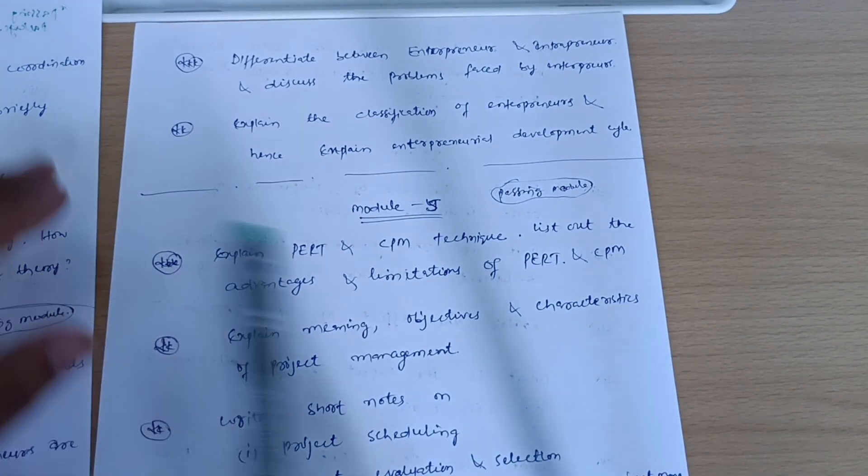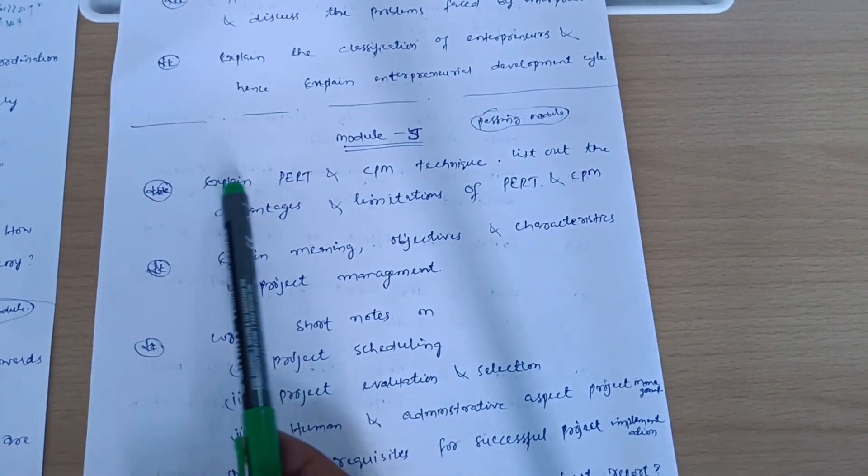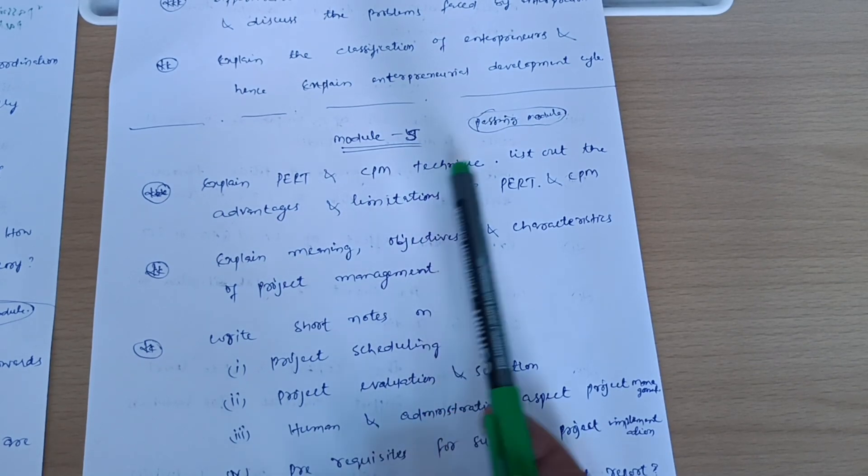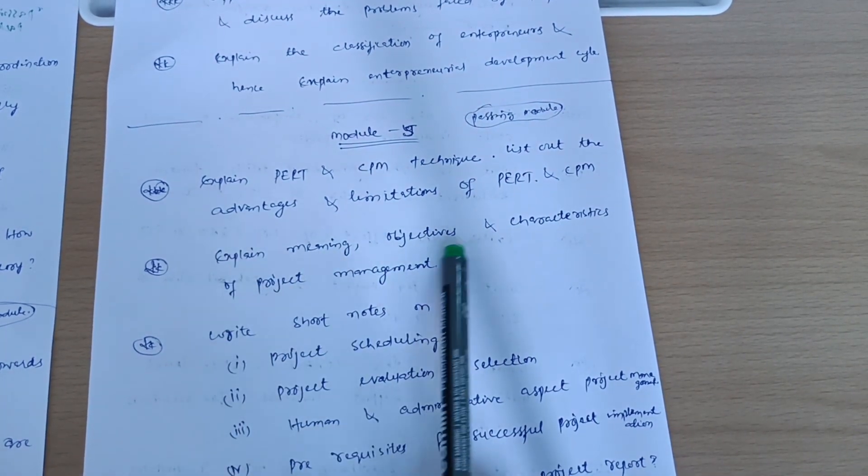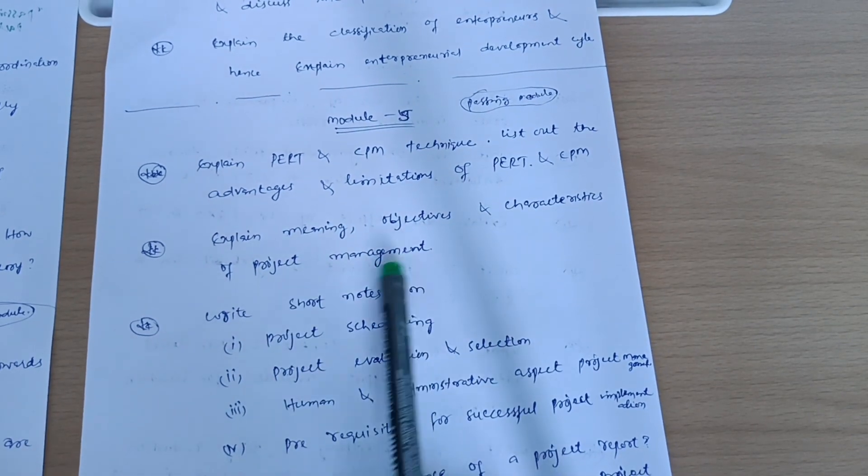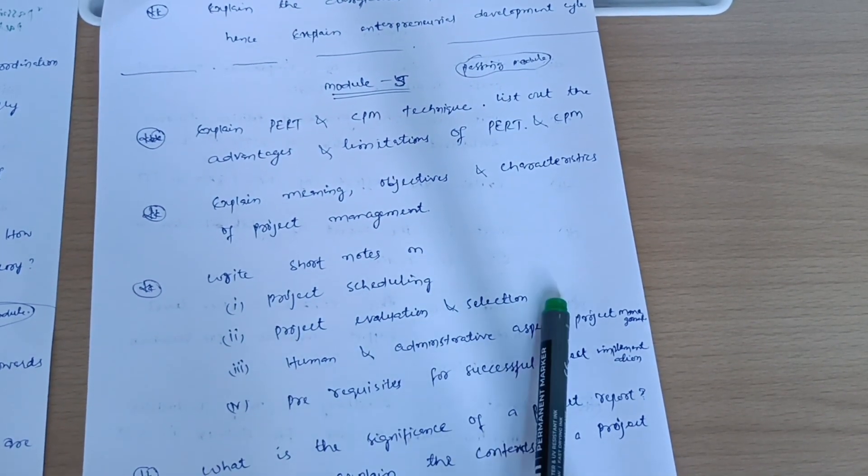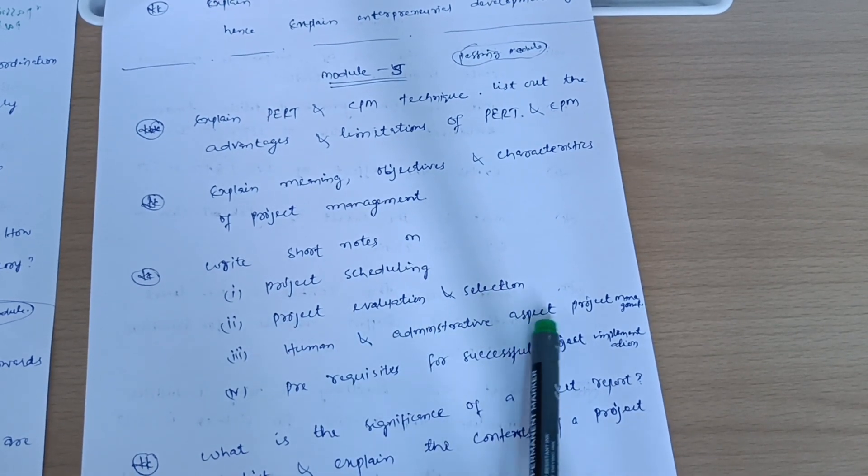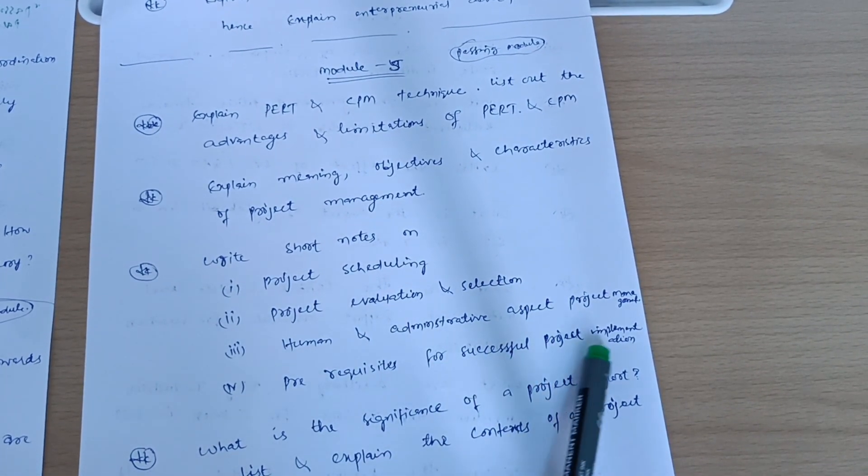Another passing module is Module 5, in which you have to cover some super important questions like: expand PERT and CPM technique, list out the advantages and limitations of PERT and CPM. Explain meaning, objectives and characteristics of project management. Write short notes on project scheduling, project evaluation and selection, human and administrative aspect, project management prerequisites for successful project implementation.